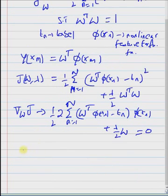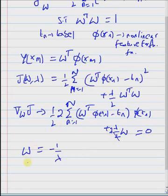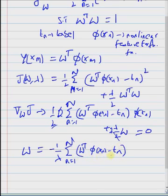The solution can be written in the form w equals minus 1 by lambda times the summation. Note that the gradient of w transpose w is 2 times w, so we have lambda times w on the right side, and the 2s cancel out. So we have the summation n equal to 1 to N of (w transpose phi of xn minus tn) times phi of xn. If you observe carefully, this scalar times the vector phi of xn shows that w is a linear combination of the non-linear feature transformation functions.